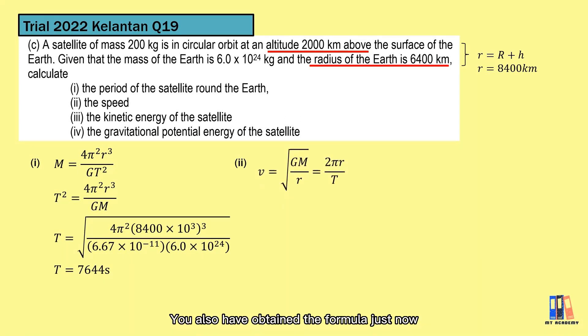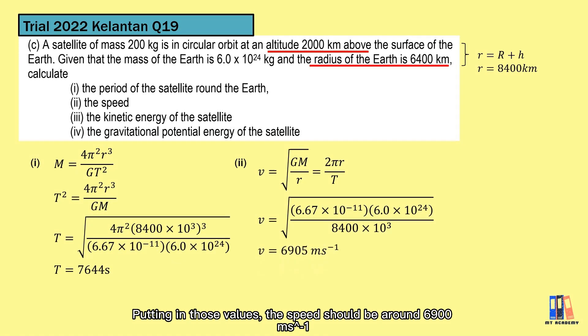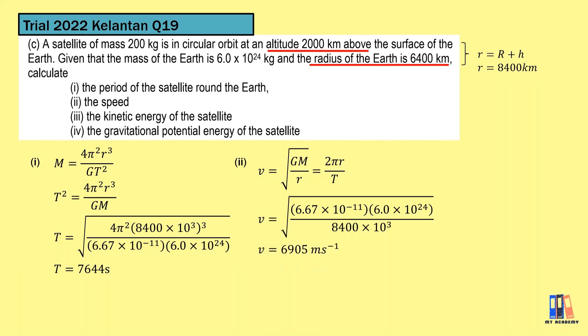Next is about the speed of the satellite. We also have obtained the formula just now. First is the square root of GM over r, or it can also be 2πr over T, since we have calculated the period of the motion. Putting those values, the speed should be around 6,900 m per second.